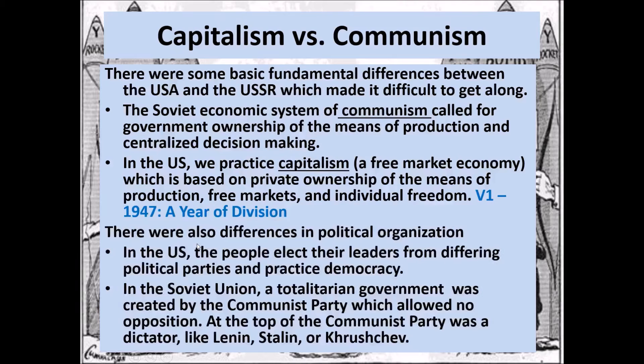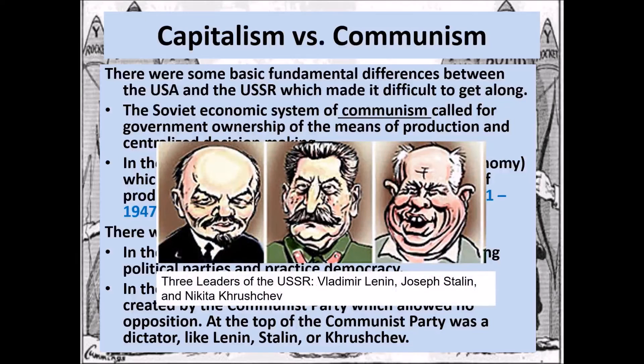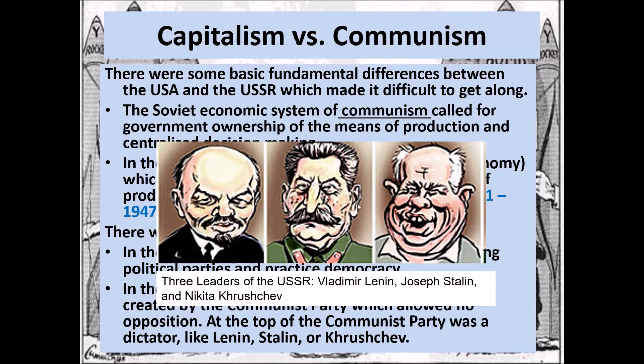There are also differences in political organization between the United States and the Soviet Union. In the United States, people elect their leaders from differing political parties and we practice democracy. In the Soviet Union there was a totalitarian government created by the Communist Party that allowed no opposition. At the top of the Communist Party was a dictator like Lenin, Stalin, or Khrushchev — shown here in cartoon drawings from left to right.